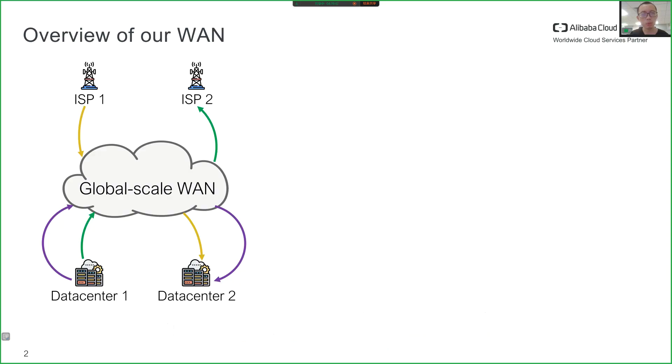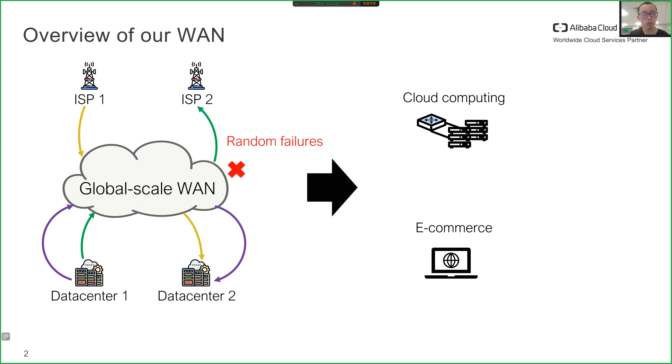Alibaba Cloud operates a global WAN that interconnects multiple POPs and dozens of data centers around the world. These WANs support services such as cloud computing and e-commerce, and they are designed to tolerate random failures of some degree k. However, in reality, random failures still cause problems resulting in customer complaints and economic losses.